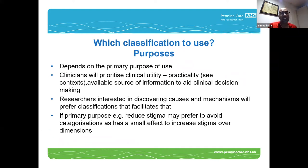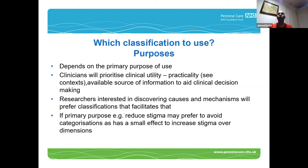Purposes — what are you using classification for? You might be trying to explain something, give an accurate description of what's going on, discover a cause or mechanism. A researcher will want a classification that focuses on that. A clinician is more interested in practicality and useful information for clinical decision-making. Sometimes people want to reduce stigma, but categorizations probably increase stigma to a slight degree because they're nomothetic — they assume everyone classified under a category shares some characteristic, and people might think there's more similarity than is actually present.